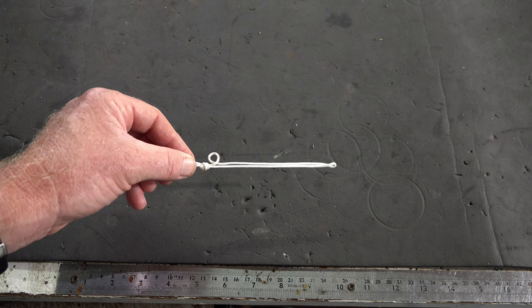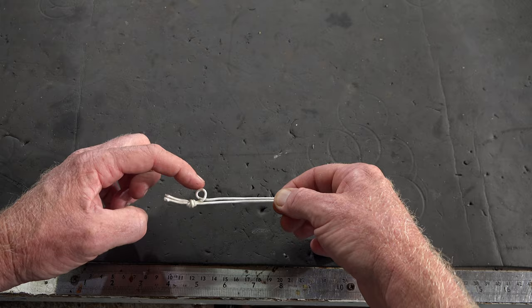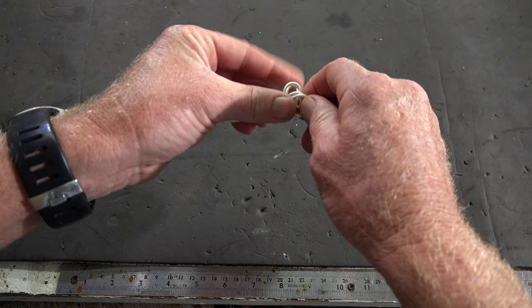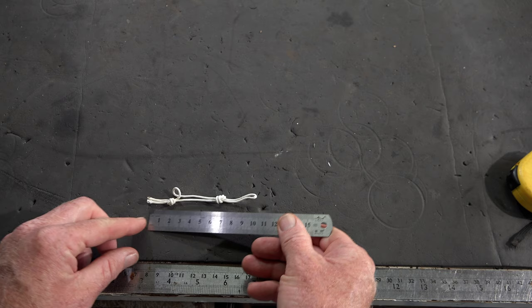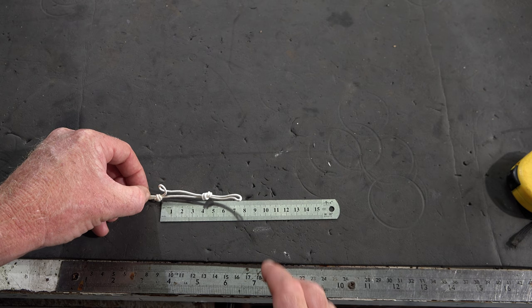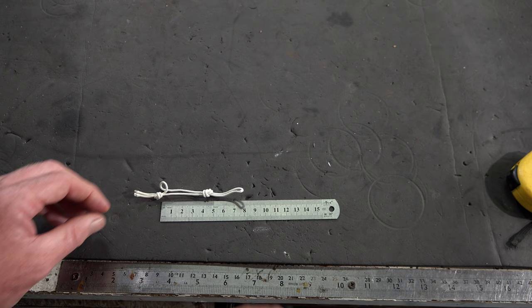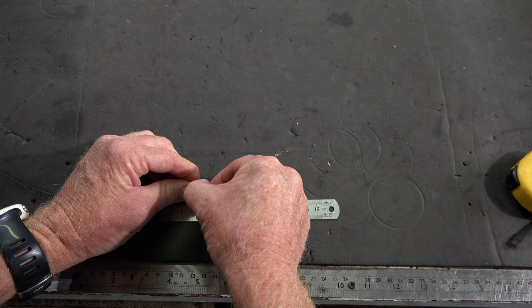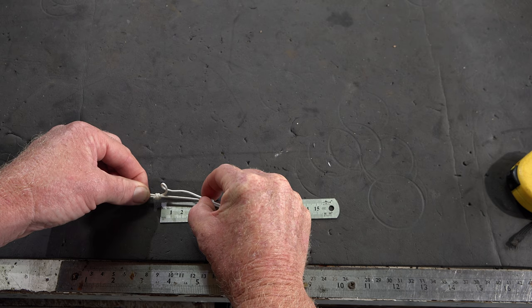And now on this end while you've still got that loop over here, we'll tie another overhand knot. The distance between these two knots is actually quite critical. I see most guys make them too long. So I'm going to start with these knots hand tightened at about four and a half centimeters because I only want this to be about five centimeters.